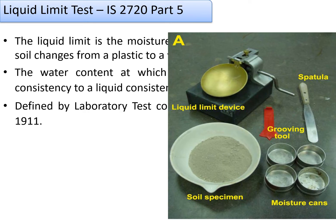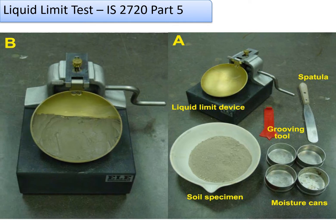To conduct this test using Casagrande's method, you require the following tools: grooving tools, spatula, moisture cans, soil specimen on a porcelain dish, and the liquid limit device. The soil specimen is basically a 425-micron passing sieve soil taken for conducting the test. The paste is prepared using the soil and water mix and is placed in the brass bowl of the liquid limit device as shown in the figure.